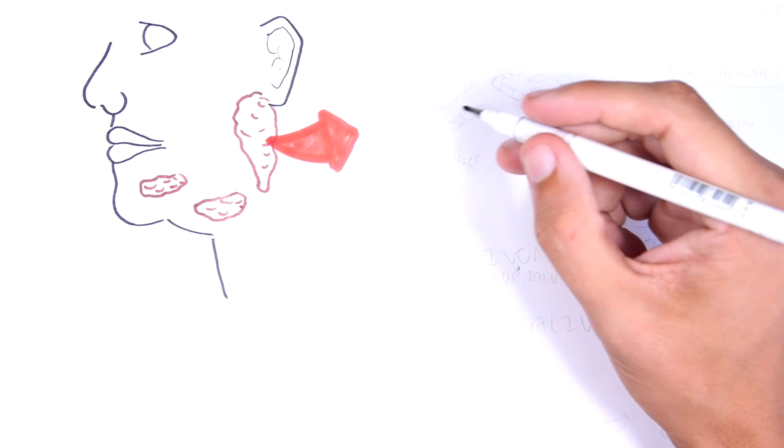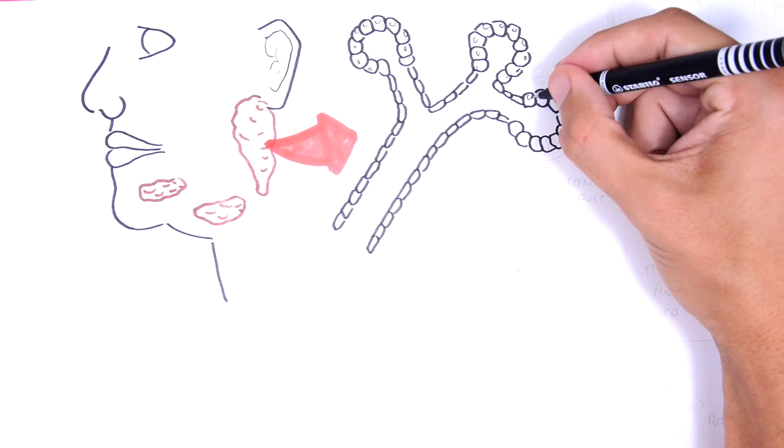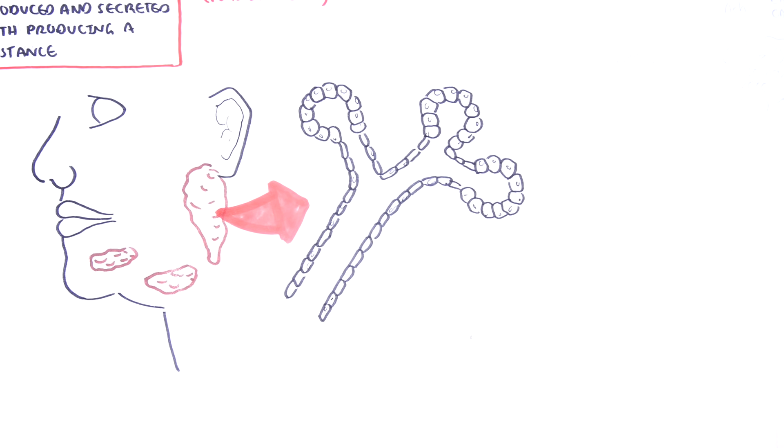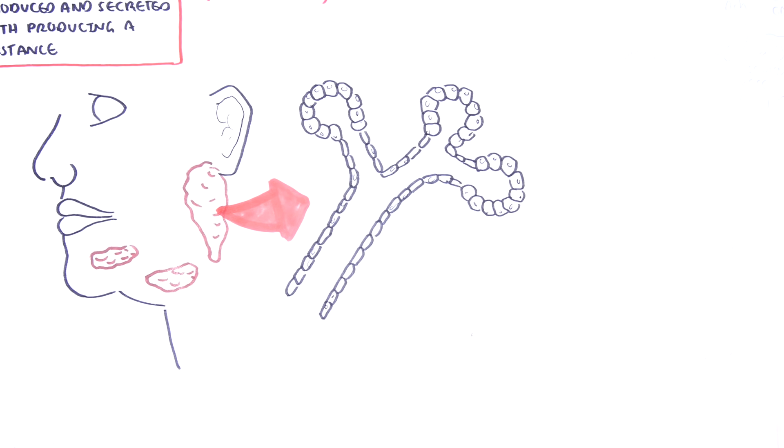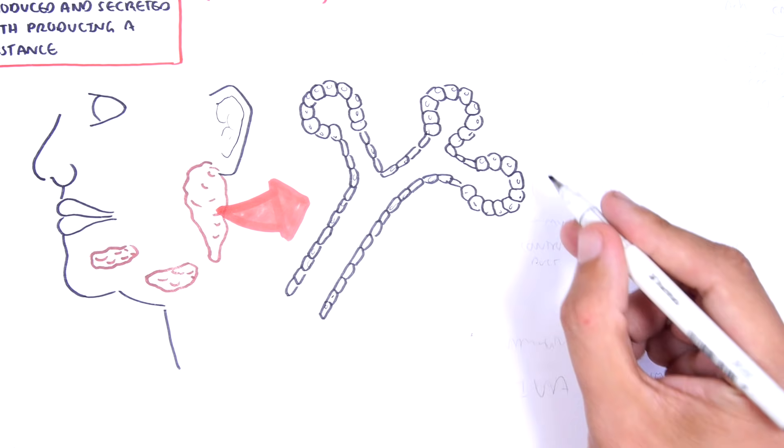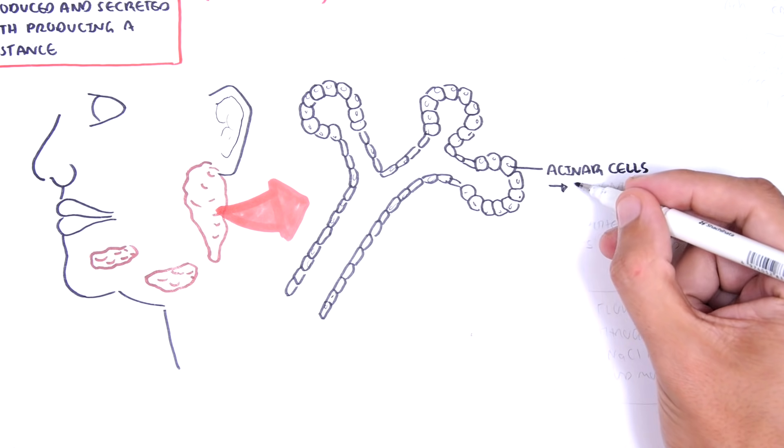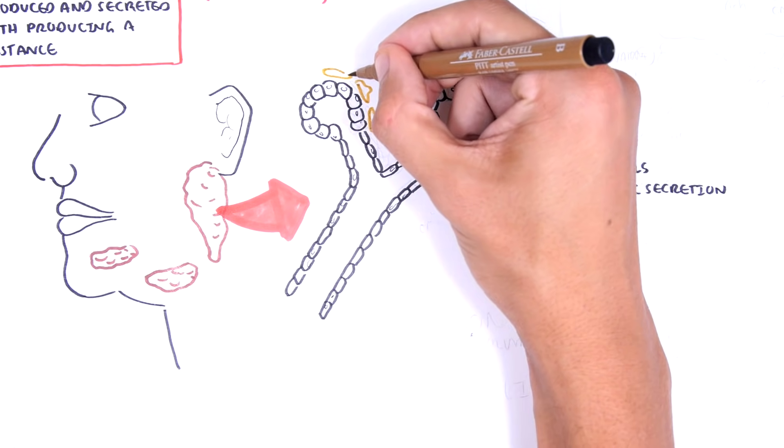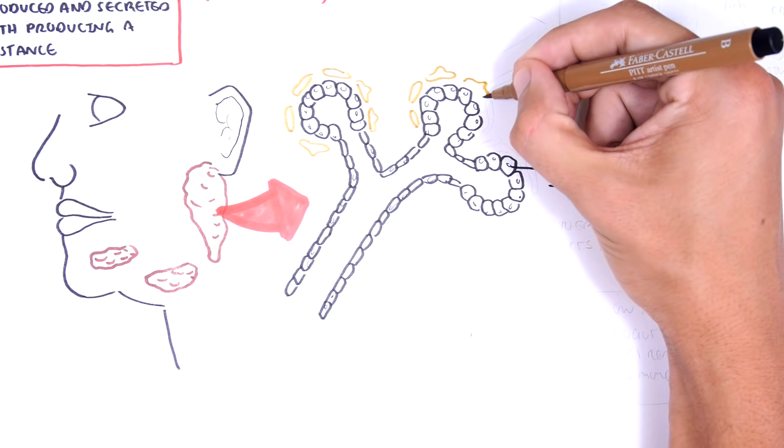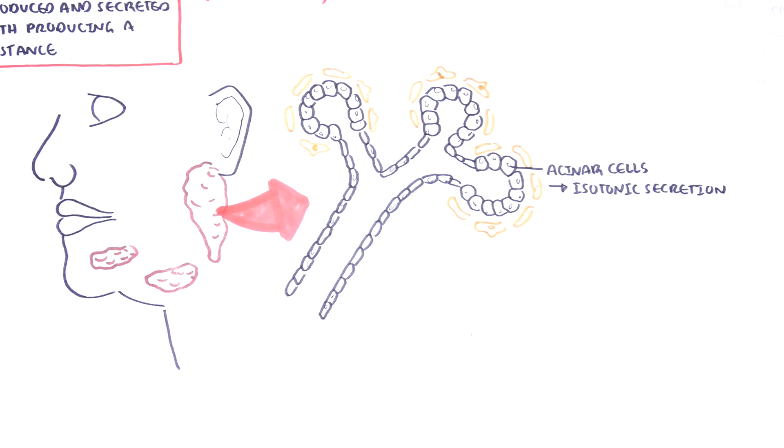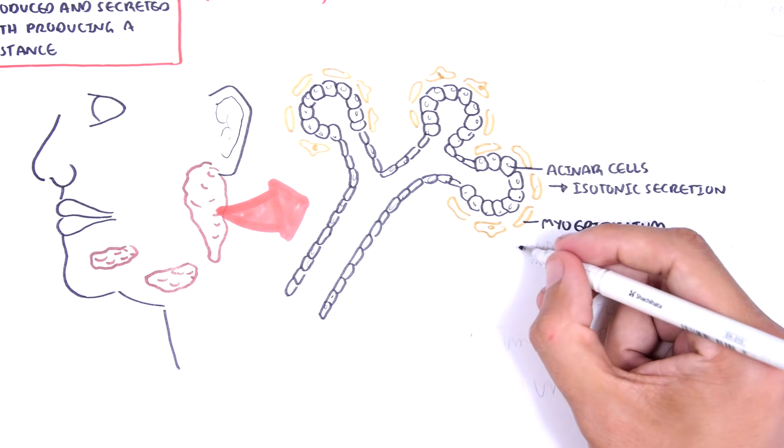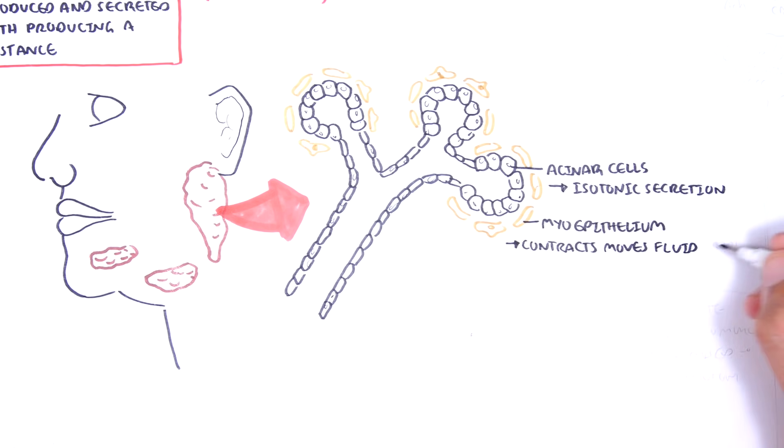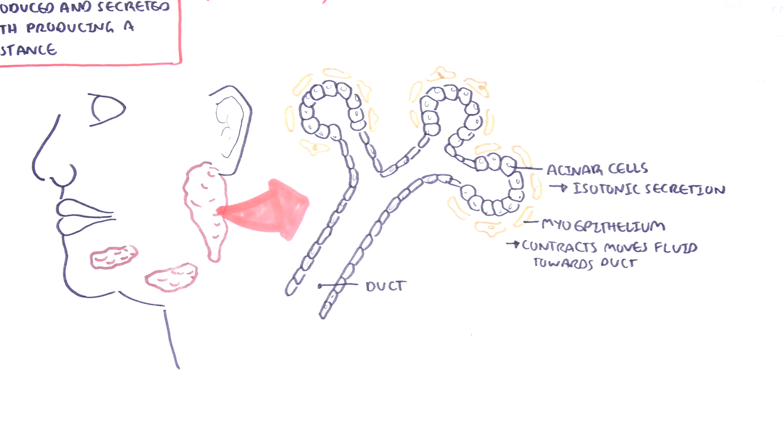Let's zoom into the structure of the salivary gland and look at how everything works. The functional unit of the salivary glands is called a salivon. A salivon consists of acinar cells which produces this isotonic secretion, and this is the first part of saliva production. Surrounding these acinar cells are myoepithelium which can contract, moving the fluid produced by the acinar cells towards the ducts.